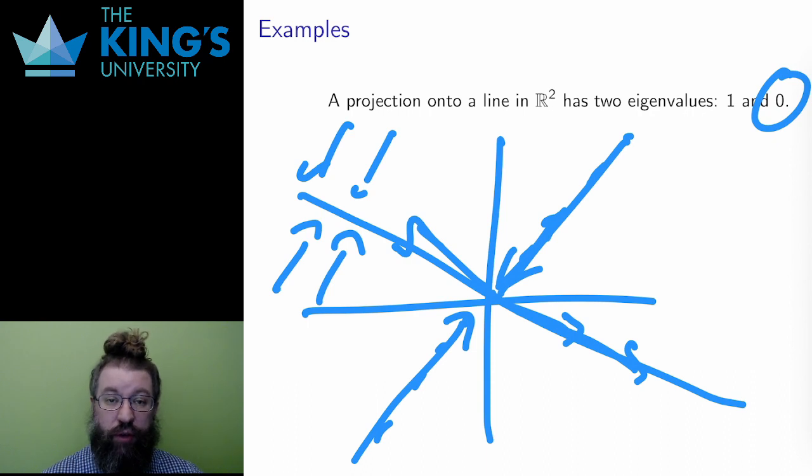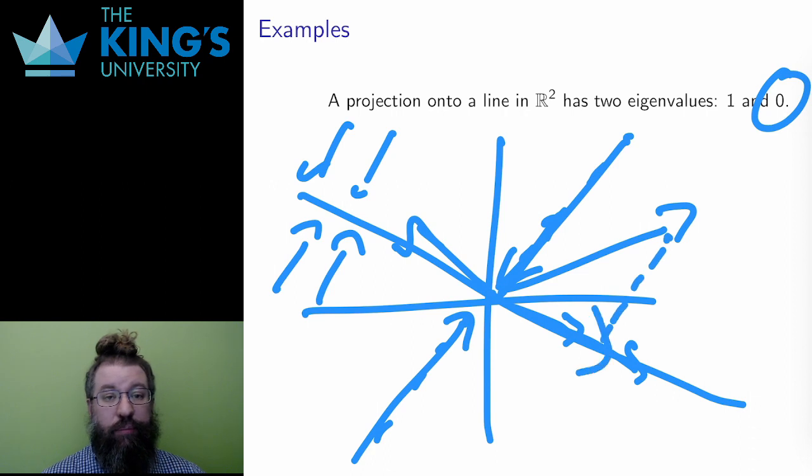Any vector that is not on the line and not directly perpendicular to it gets collapsed to the line. For these vectors, this is a change of direction, so they cannot be eigenvectors.